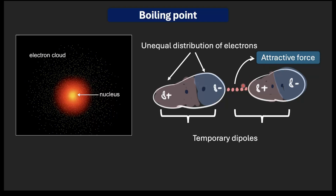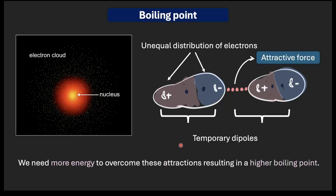A larger alcohol molecule with more electrons means more opportunities for instantaneous dipoles to form, contributing to stronger van der Waals forces overall. As a result, more energy is needed to overcome these attractive forces, resulting in a higher boiling point for larger alcohols. If you have doubts about how temporary dipoles form and affect van der Waals forces, I would recommend reviewing the topic on van der Waals forces.